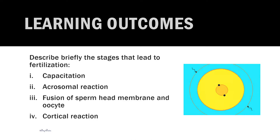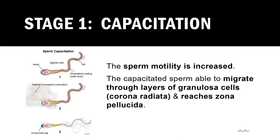The first stage of fertilization is Capacitation. This term comes from the word 'capacity.' During stage one, capacitation means boosting the capacity of mature sperm, which are spermatozoa, in terms of their motility. When motility is increased, this capacitated sperm is able to penetrate through the corona radiata — the layer of cells called granulosa cells surrounding the secondary oocyte — until they reach the zona pellucida, which is the thick glycoprotein layer.